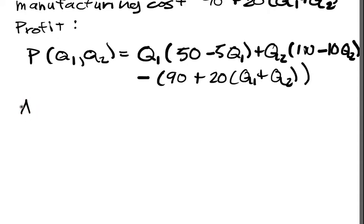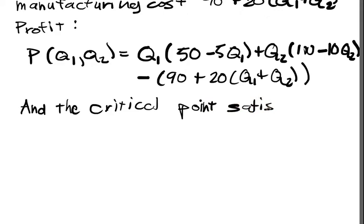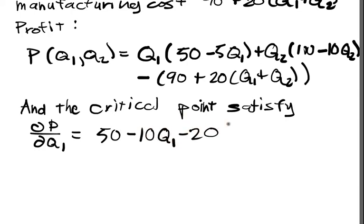And the critical points satisfy, well of course, ∂P/∂Q1 is equal to 50 minus 10Q1 minus 20. And if that's equal to 0, this will happen if and only if Q1 is equal to 3.